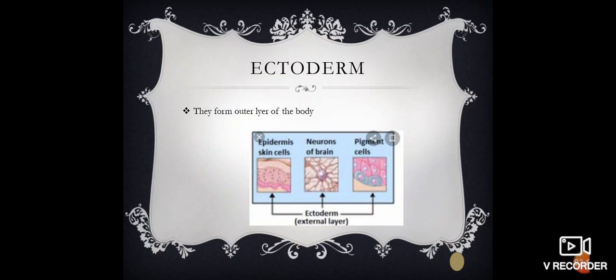Here we move. Ectoderm. Ectoderm forms outer layer of the body. They form epidermis cells, neurons of brain, pigment cells.